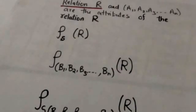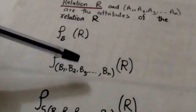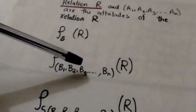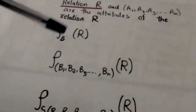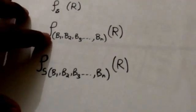Attribute name a1 will be changed to B1, attribute name a2 will be changed to B2, attribute name a3 will be changed to B3, and so on, up to attribute name an will be changed to Bn.